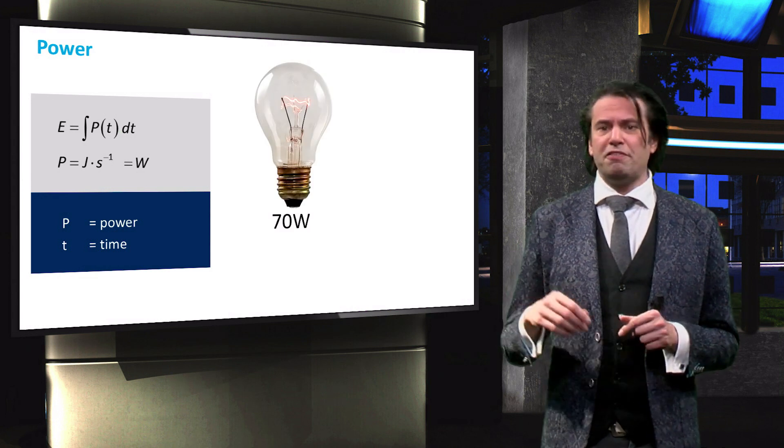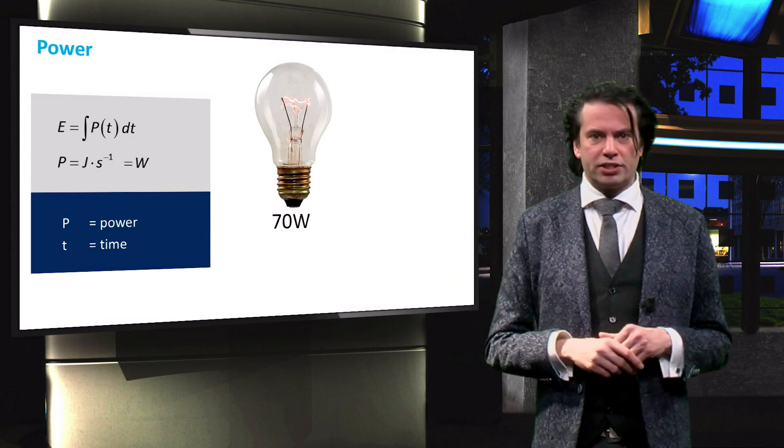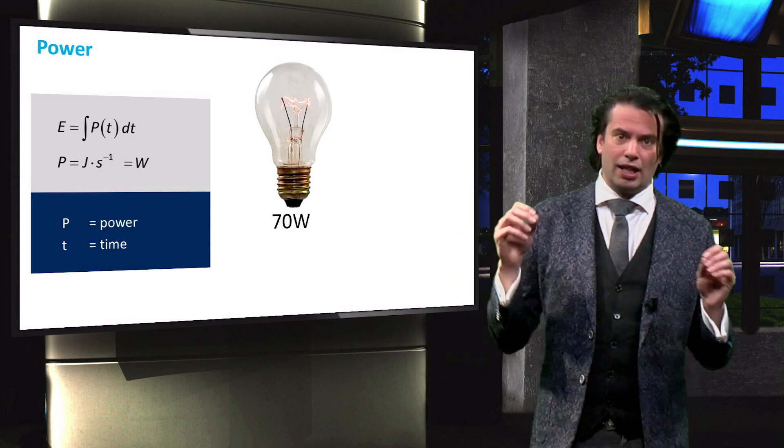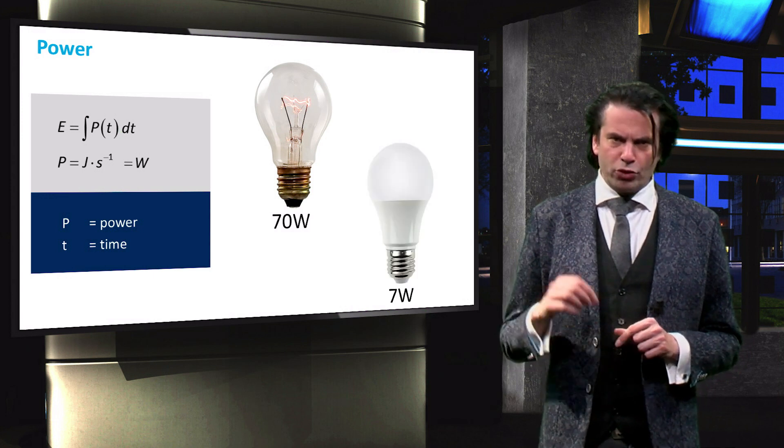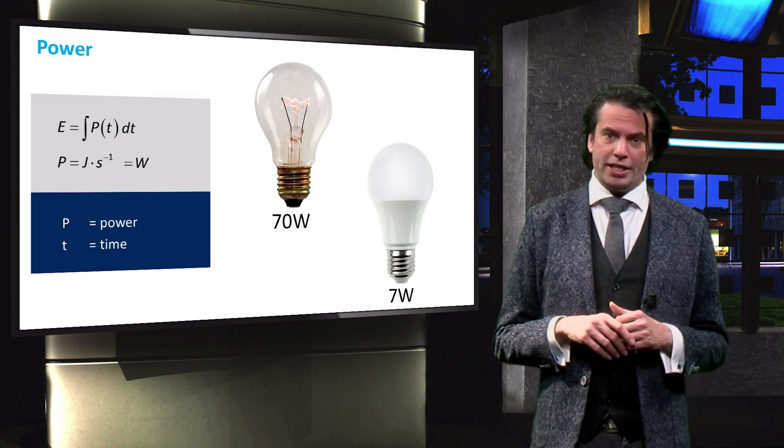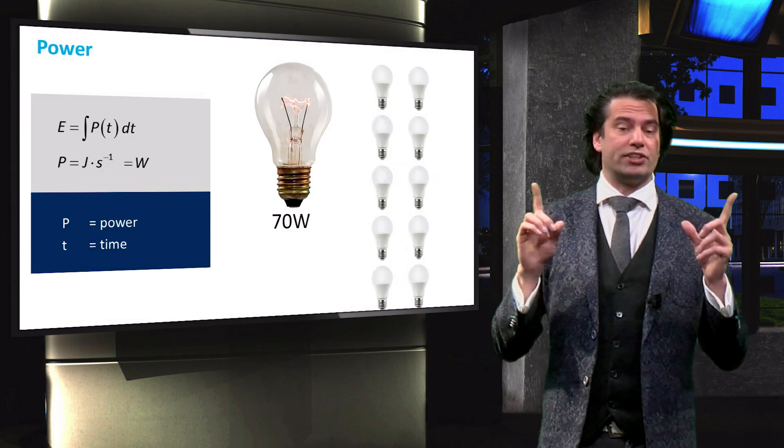As an example, with 70 joules of energy we could power this 70 watt incandescent light for exactly one second. We could also power this 7 watt LED light for 10 seconds or 10 of these LED lights for one second.